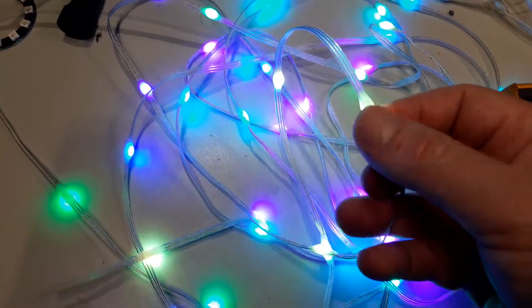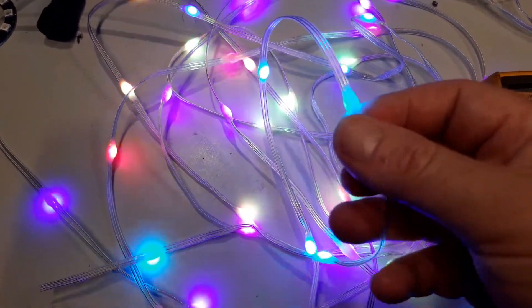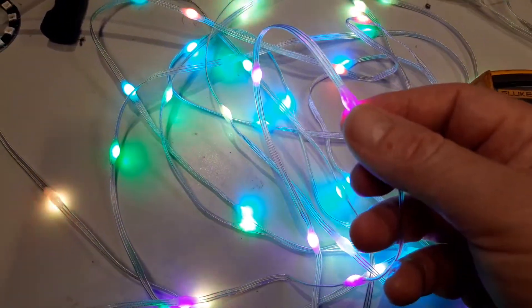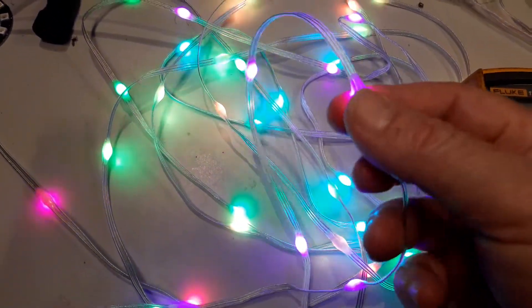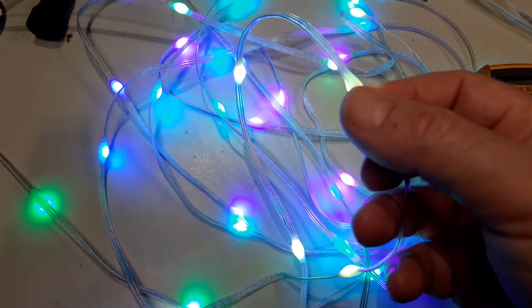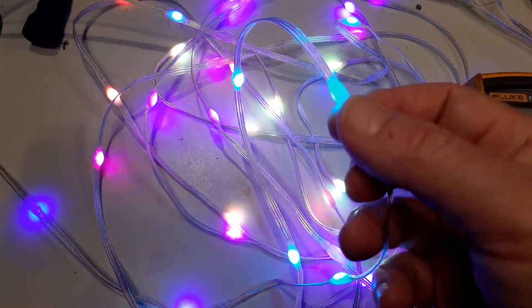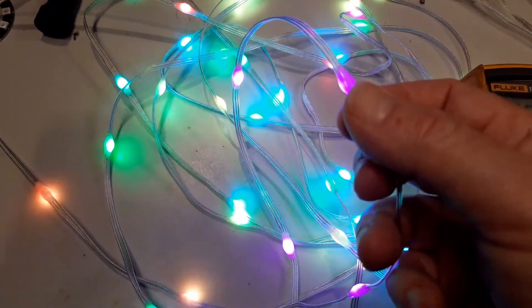The whole roll that I was sent was 200 pixels and I did try just to see what would happen powering it from one end, and it did not like it very well at all. So obviously there's way too much voltage drop over the length of 200 pixels. It probably stopped about halfway in.